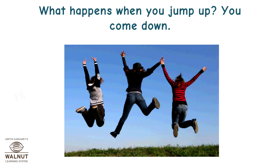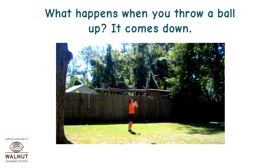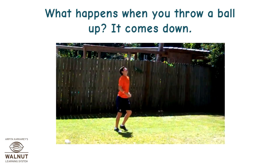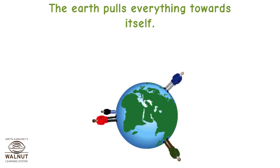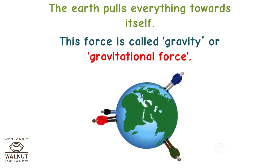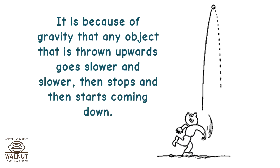What happens when you jump up? You come down. What happens when you throw a ball up? It comes down. Why does everything come down? The earth pulls everything towards itself. This force is called gravity or gravitational force. It is because of gravity that any object thrown upwards goes slower and slower, then stops and then starts coming down.